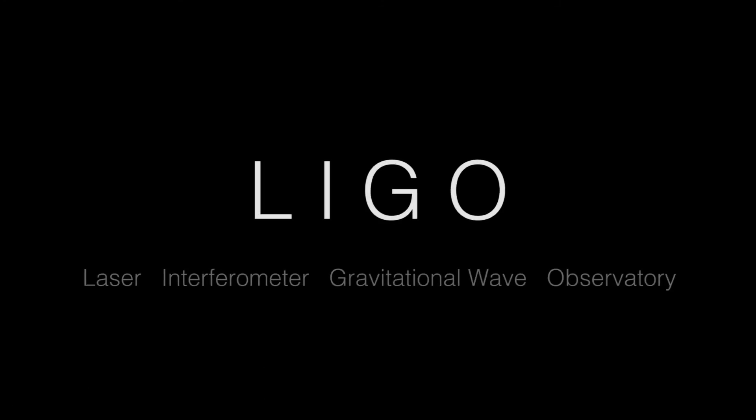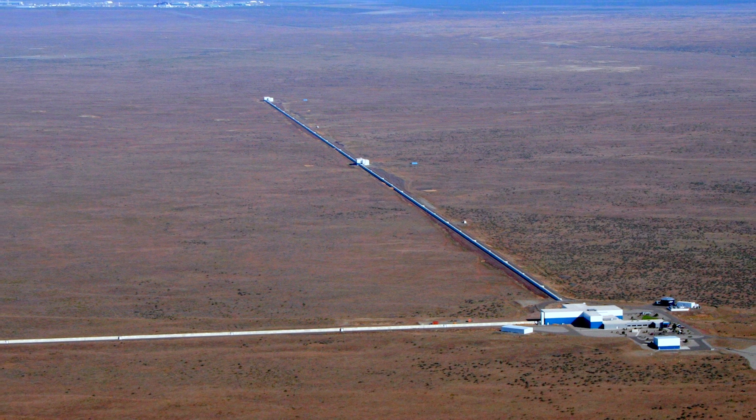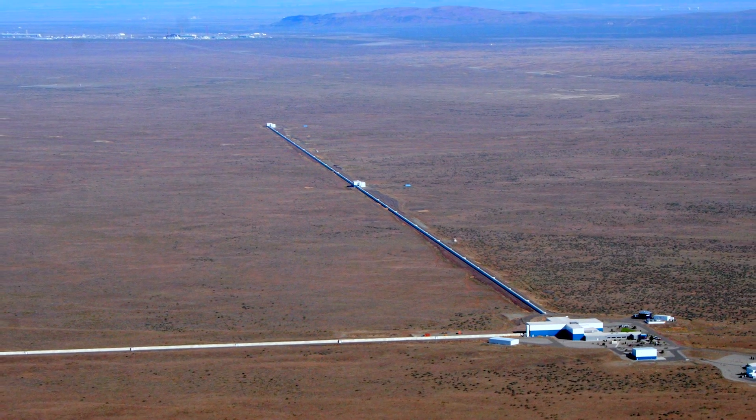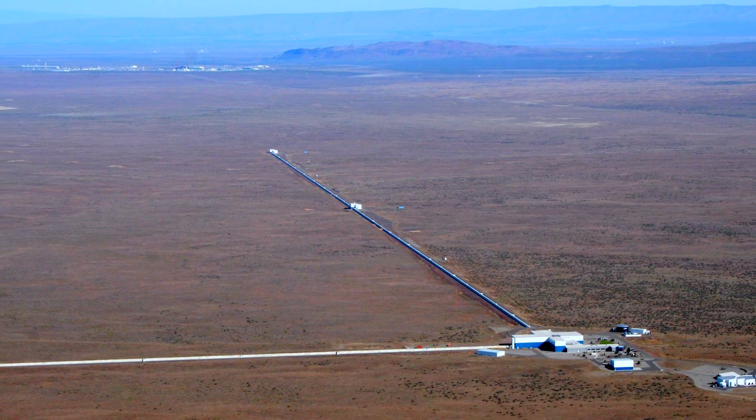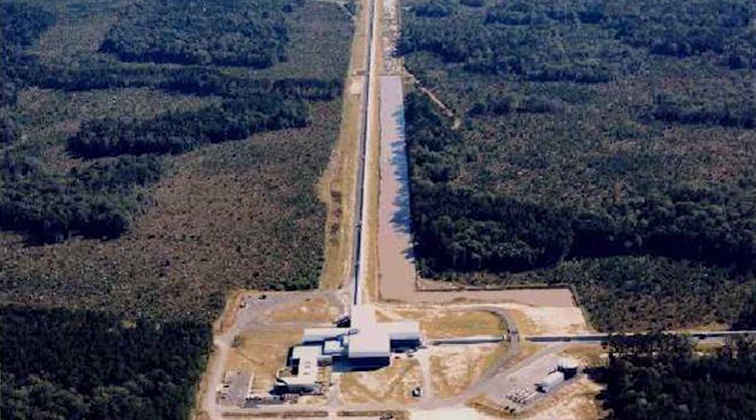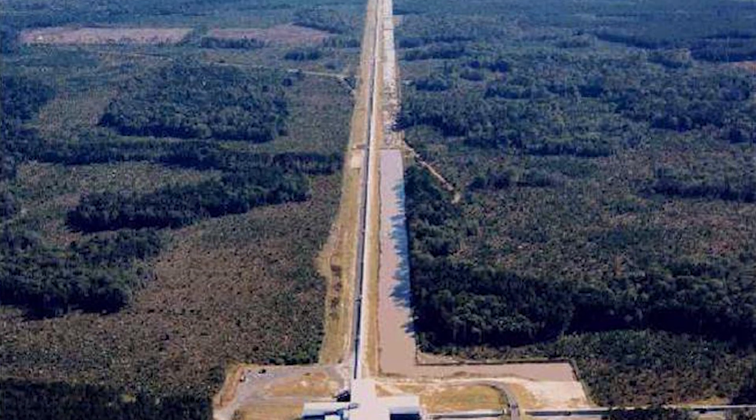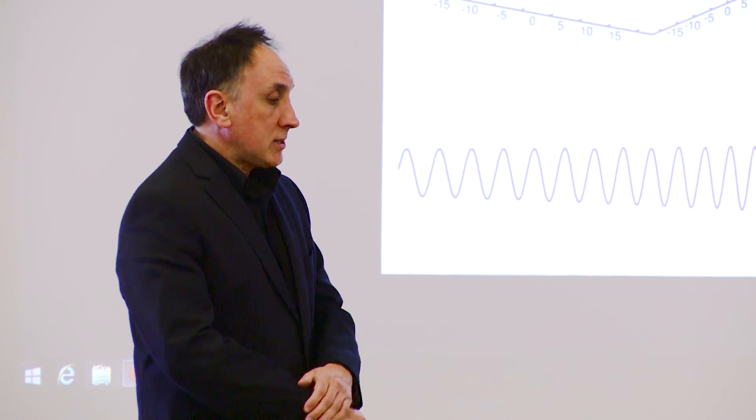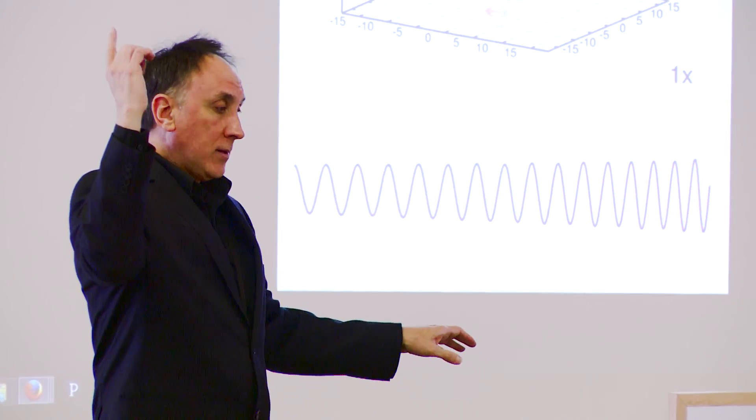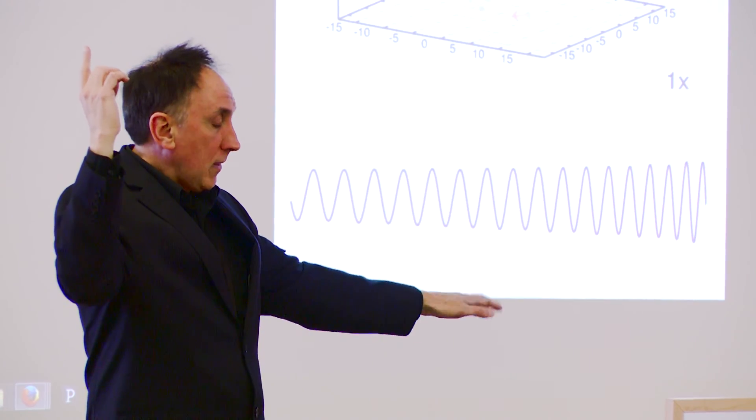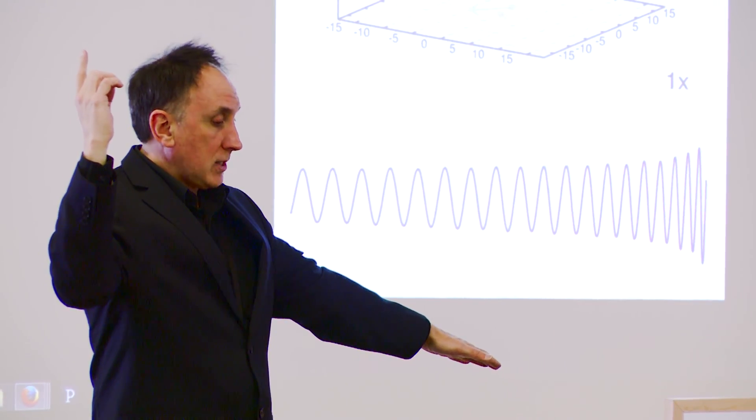LIGO, the Laser Interferometer Gravitational Wave Observatory, is a kilometer-scale interferometer. They look for changes in the geometry of space and time that would be caused by gravitational waves by looking at changes in distances. And it can make very fine measurements, not in an absolute distance, but in the difference between two lengths. So it can tell if one of its arms is very slightly longer than the other.